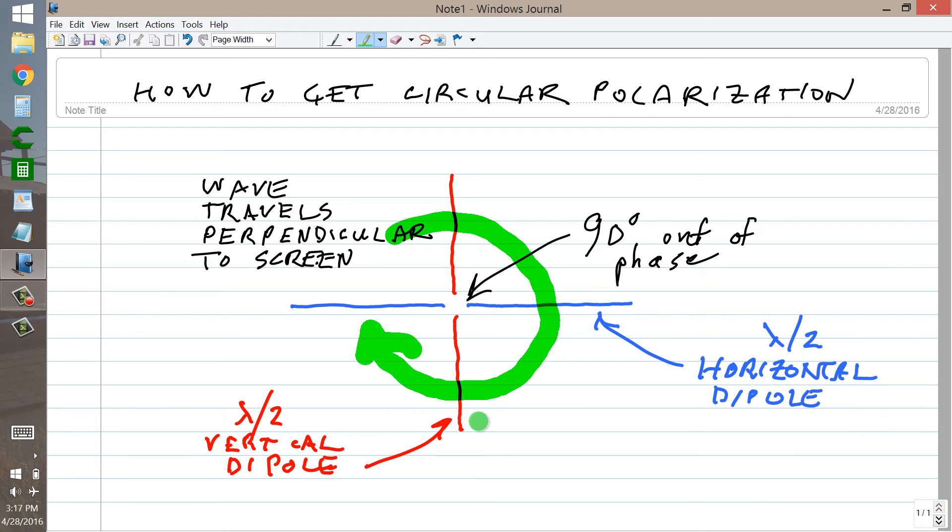The magnetic lines of flux, seldom mentioned, run perpendicular to the electric lines of flux, but in the same plane as the electric lines of flux.